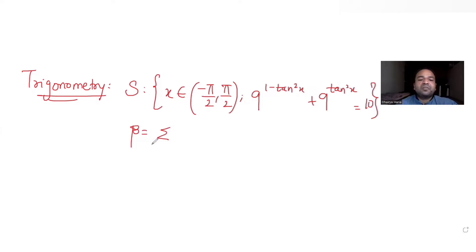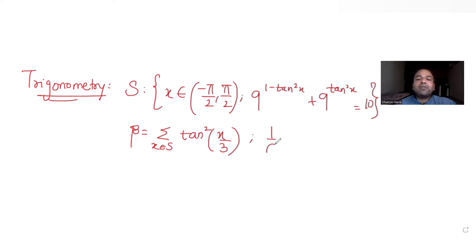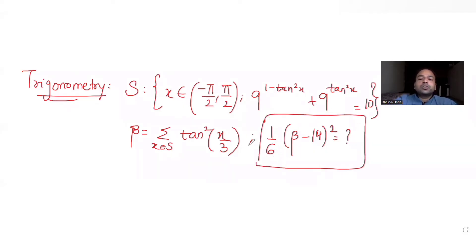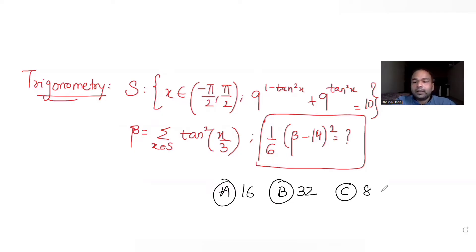Beta is defined as the summation over all x in set S of tan²(x/3), and we are asked to find the value of (1/6·β - 14)² — or the related expression as given. The options provided are 16, 32, 8, and 16.